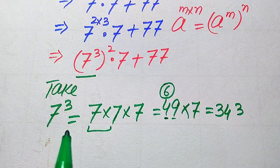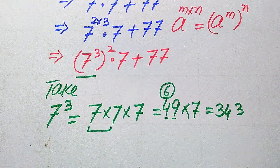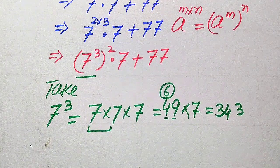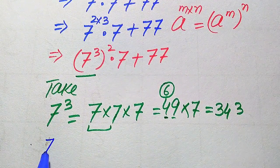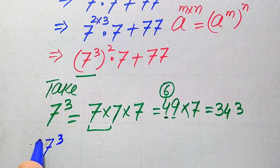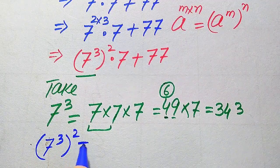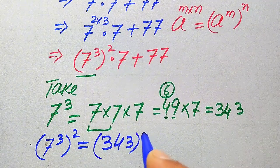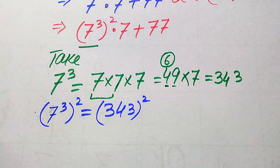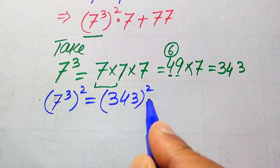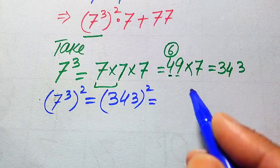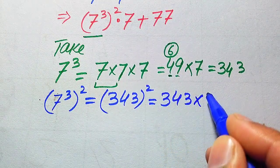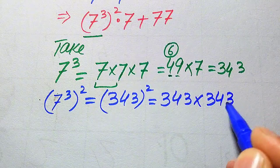Now we need to find the square of 7 cubed. We take squaring on both sides, so 7 cubed whole square equals 343 whole square. The square of 343 means we multiply 343 by 343.